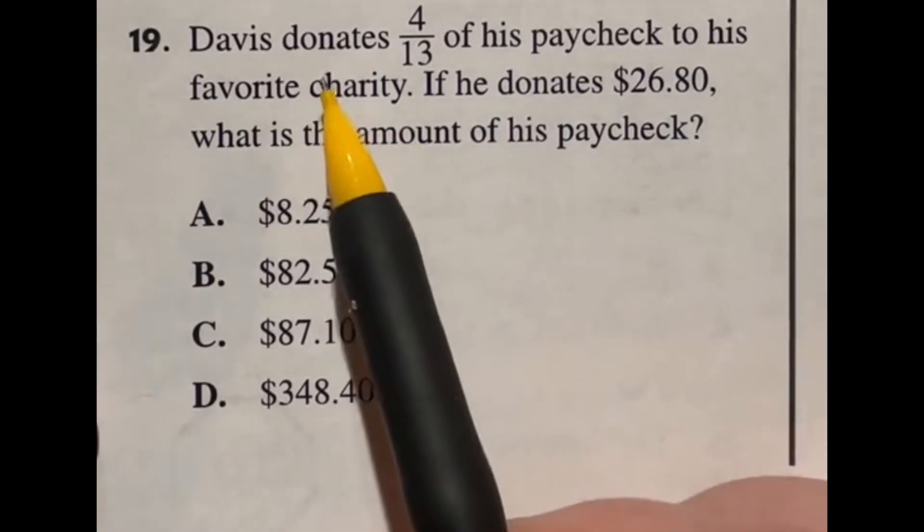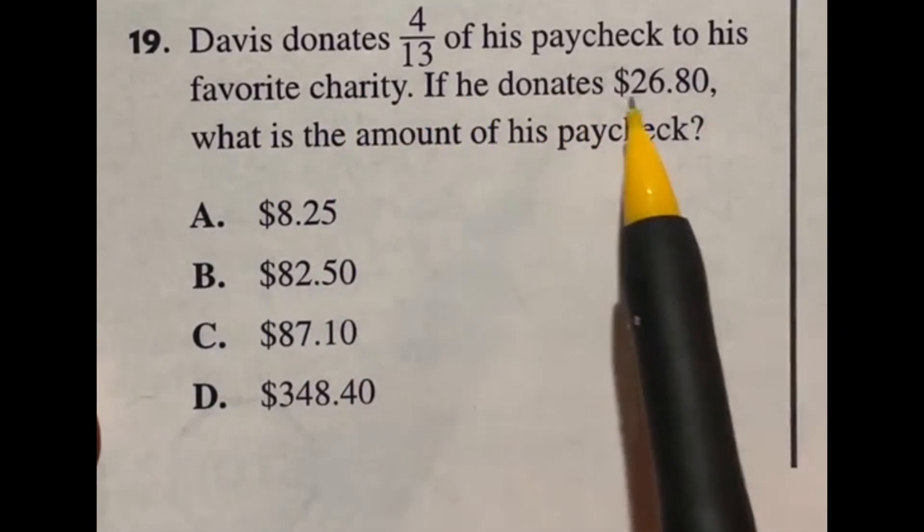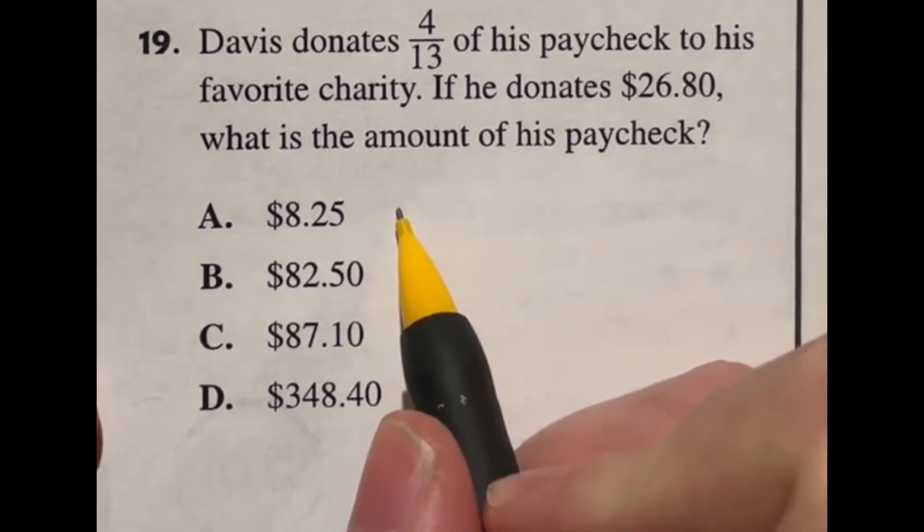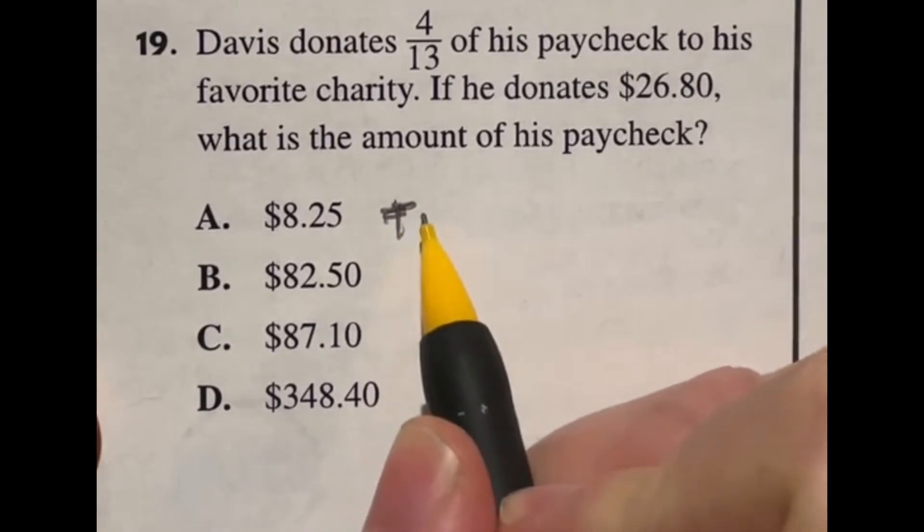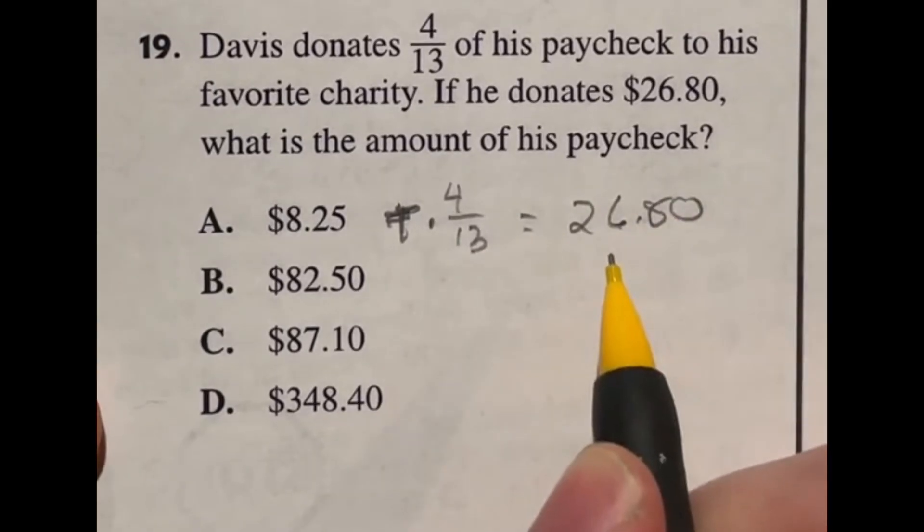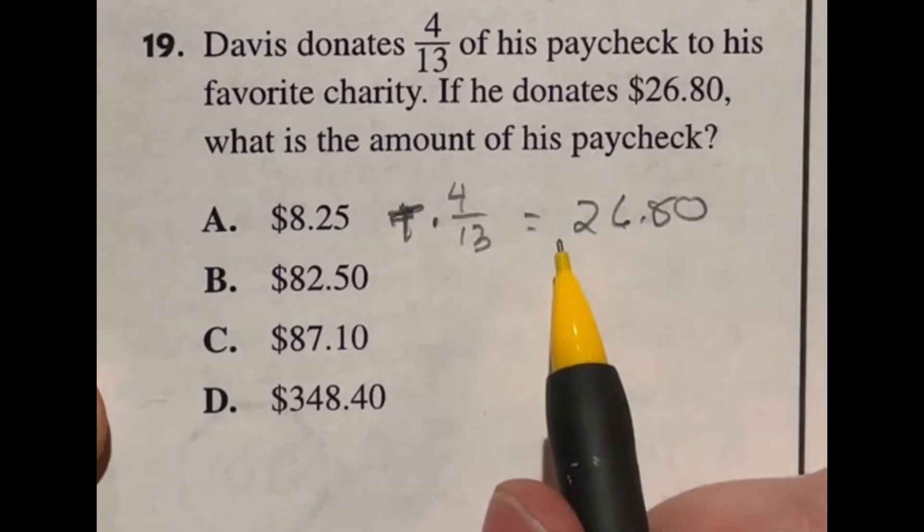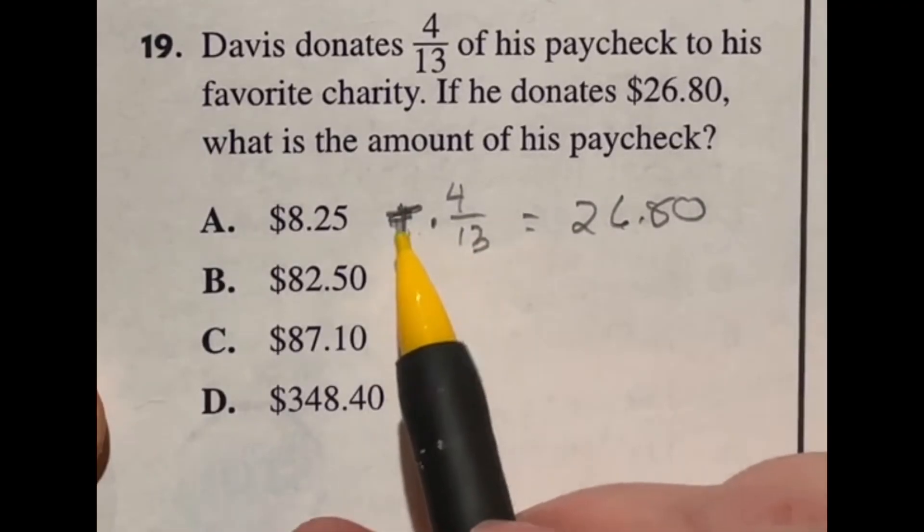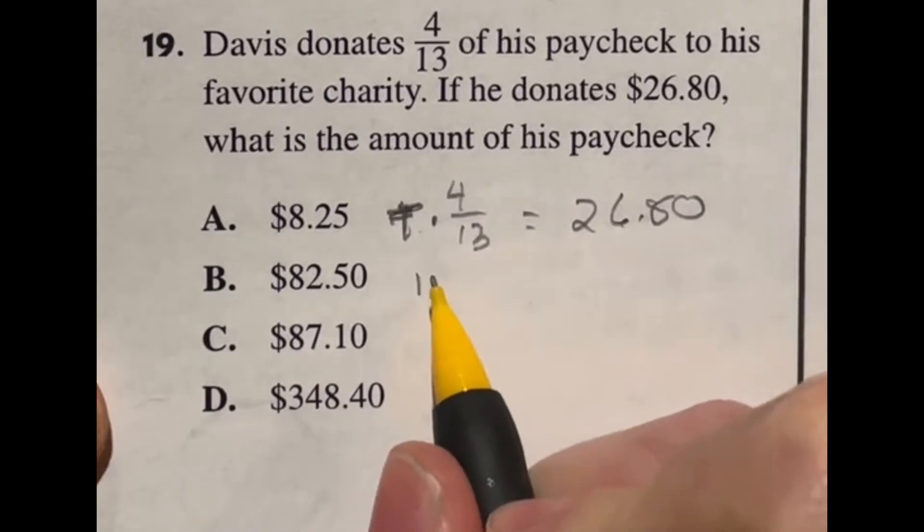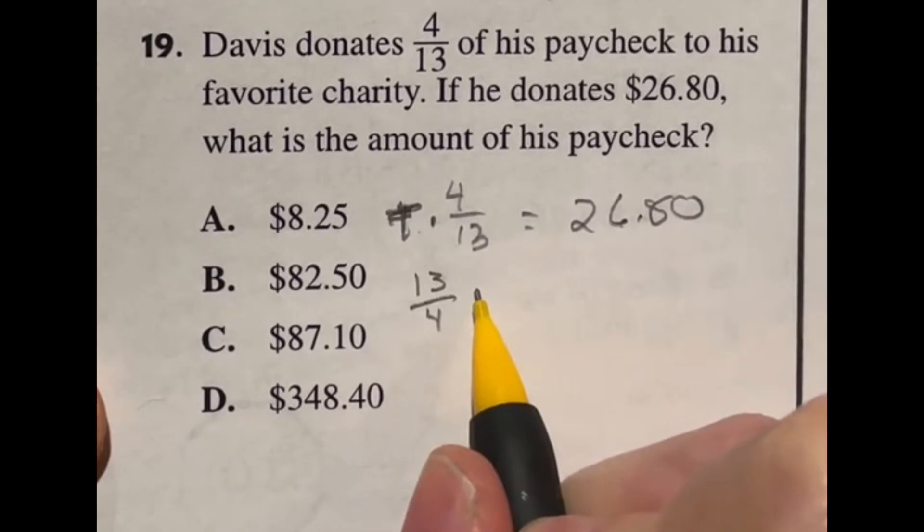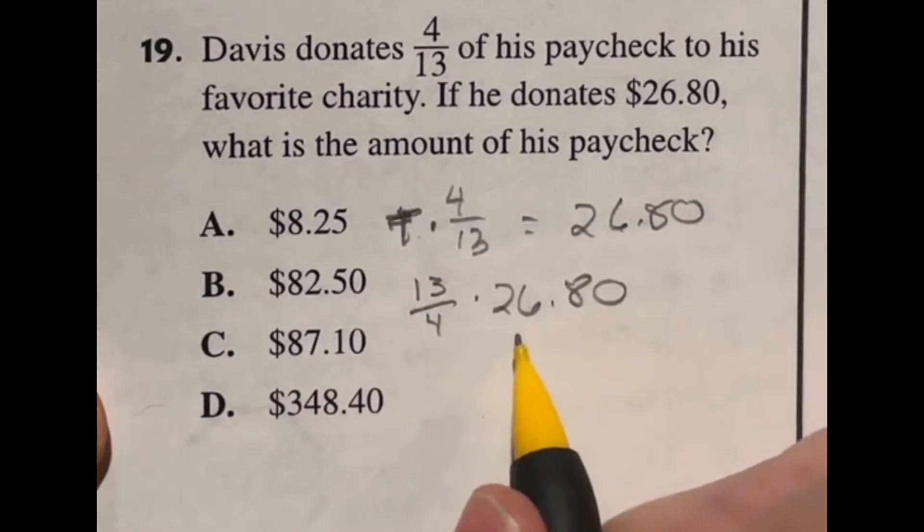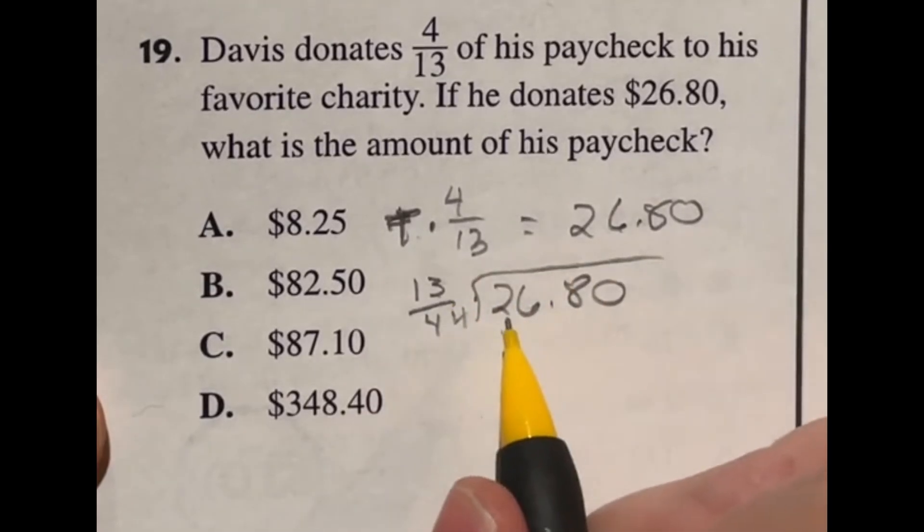Number 19 on the ASVAB says David donates four thirteenths of his paycheck to his favorite charity. If he donates $26.80, what is the amount of his paycheck? So the way that you would do this is you would take the total amount. We'll just say T for total. Then we would multiply that by four over 13. And that would tell you the $26.80 that we'd be looking at. But in this case, we have this as the answer. So we actually have to divide this by the fraction to get T by itself to find out the total amount he's making. Well, dividing by a fraction is just multiplying by the reciprocal. What does that mean? It means you take that number and you flip it upside down. That's the reciprocal. And then you can multiply it by the guy over here. And that will give us our final answer.